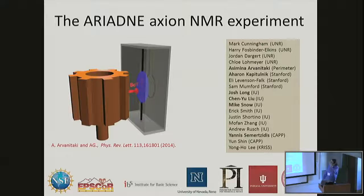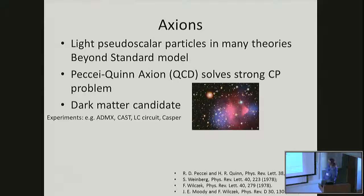In the last time I wanted to make sure to at least discuss something about this new experiment that just recently got some funding from the NSF that we're developing. This is an NMR-based experiment to search for the QCD axion. It's got collaborators from our institution, Stanford, Indiana University, the Center for Axion Physics in Korea, and Perimeter Institute. Axions, we've heard only a little bit about I think so far at this workshop, we're going to hear more in the following talks.